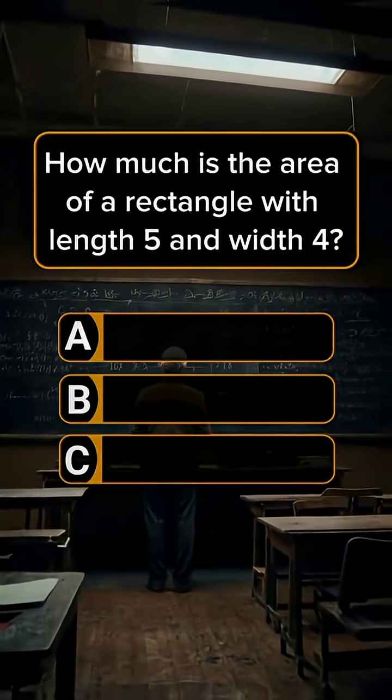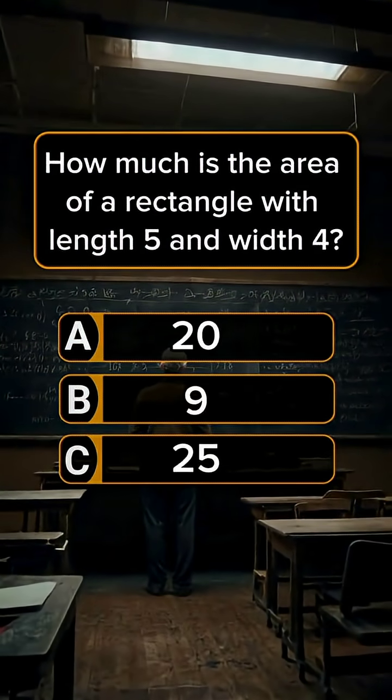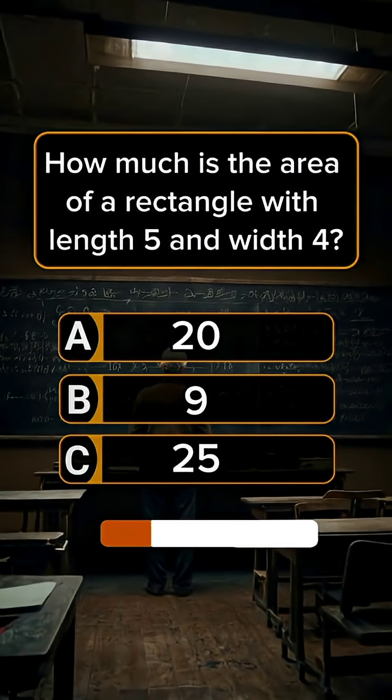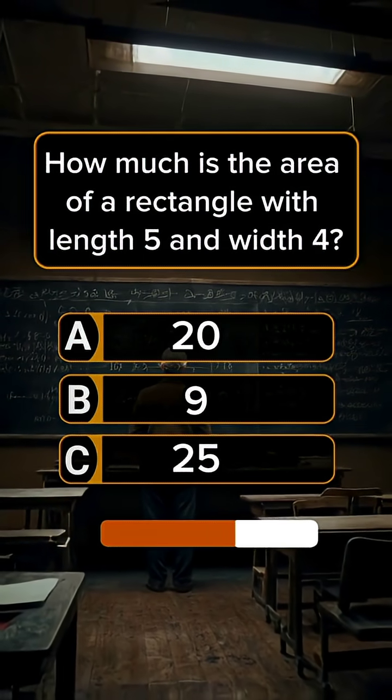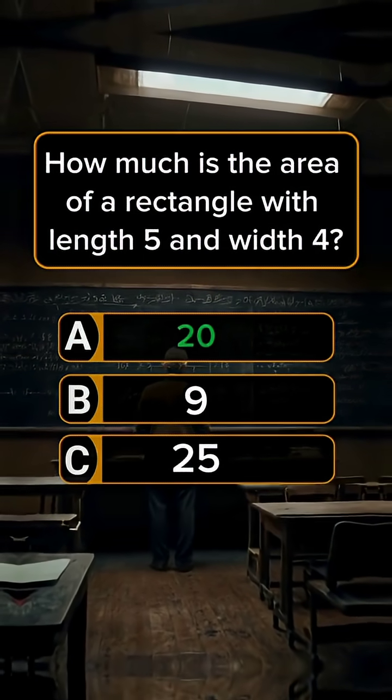How much is the area of a rectangle with length 5 and width 4? Answer A. 20.